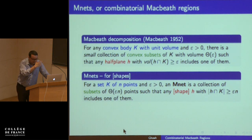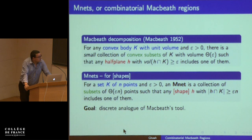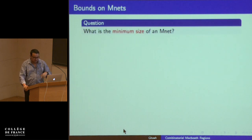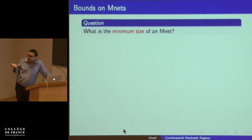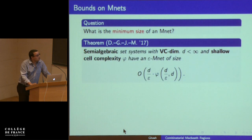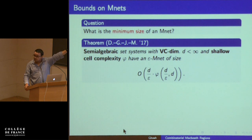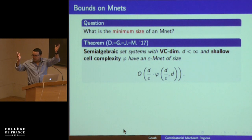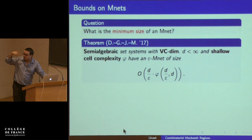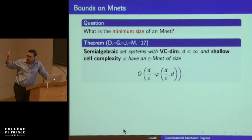For the rest of the talk, just think of disks and half-planes. The goal was to build a discrete analogue of the Macbeth tool. The question is: what is the minimum size of an M-net? The bound is (1/ε)·φ(d/ε, d), where phi is the shallow cell complexity of the set system and d is the VC dimension. The set systems considered are semi-algebraic: points and half-spaces, points and balls, points and rectangles, things like this.